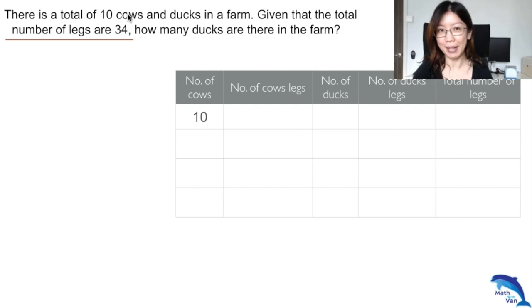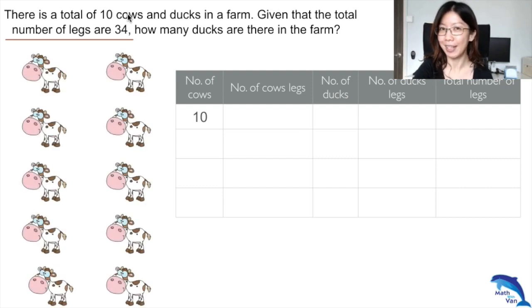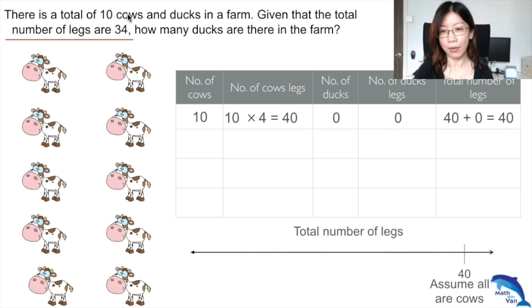So 10 cows means the number of legs coming from the cows would be 10 times 4 equals 40. There'll be zero ducks, so zero legs from the ducks. The total as you can see is 40 plus 0, which is 40. Let's use the number line to better understand the link between these two.